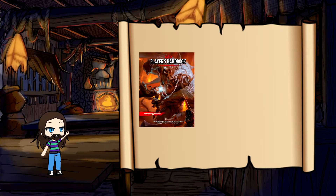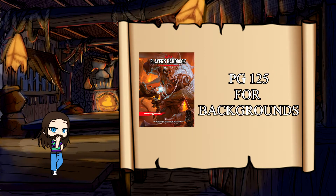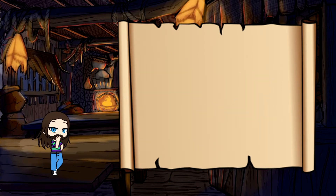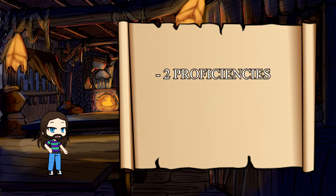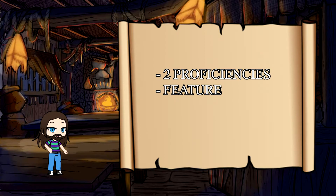The Player's Handbook has a ton of options for you to pick from starting on page 125. What all does a background include? Well, there are a number of things that all backgrounds have in common. First, you'll gain two proficiencies in skills according to what background you pick. You will also gain a feature, a special ability that can come in handy depending on the right circumstances.